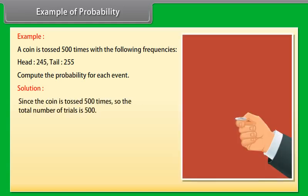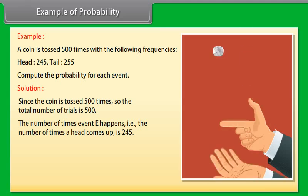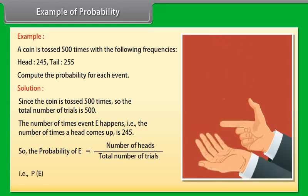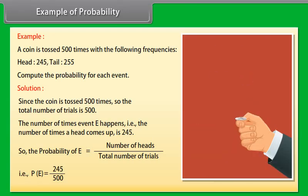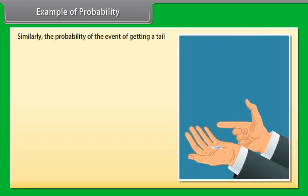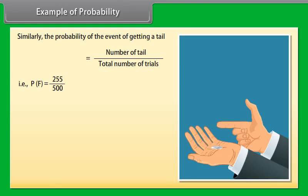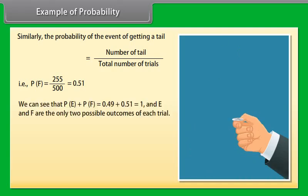Solution. Since the coin is tossed 500 times, so the total number of trials is 500. The number of times event E happens, that is the number of times a head comes up, is 245. So the probability of E is equal to number of heads upon total number of trials. That is P(E) is equal to 245 upon 500 is equal to 0.49. Similarly, the probability of the event of getting a tail is equal to number of tails upon total number of trials. That is P(F) is equal to 255 upon 500 is equal to 0.51. We can see that P(E) plus P(F) is equal to 0.49 plus 0.51 is equal to 1. And E and F are the only two possible outcomes of each trial.